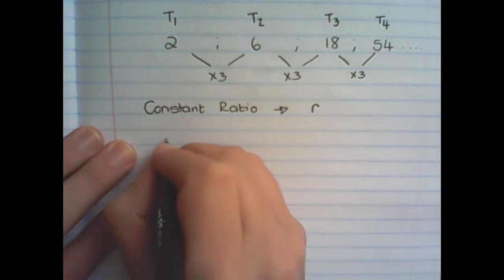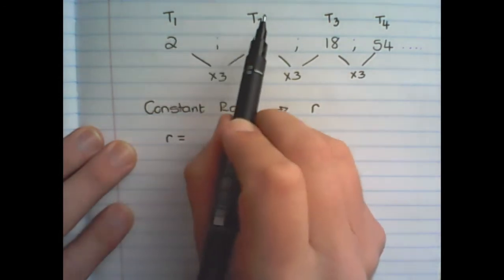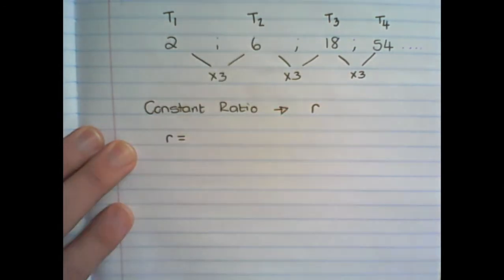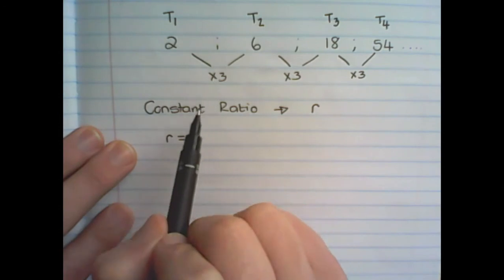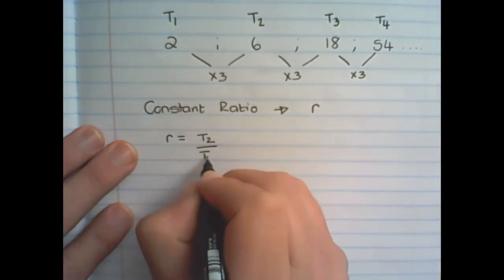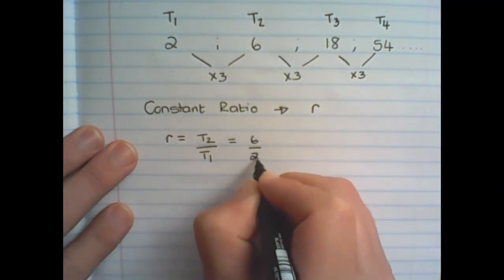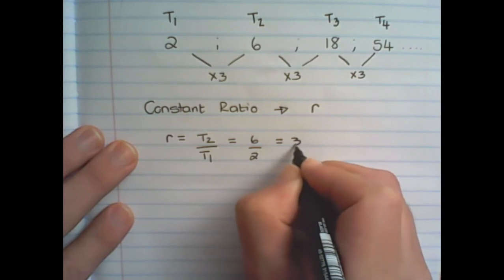And as we have found D by subtracting term 1 from term 2, we can also find the constant ratio by dividing term 2 with term 1. So that would be 6 divided by 2, and that is equal to 3.